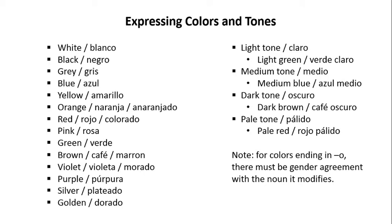Silver is plateado. Golden is dorado. A light tone in Spanish is claro — for example, light green is verde claro. A medium tone is medio — for example, medium blue is azul medio. A dark tone is oscuro — for example, dark brown is café oscuro. A pale tone is apálido — for example, pale red is rojo apálido.